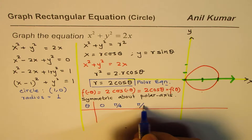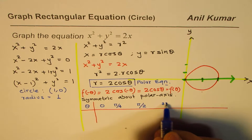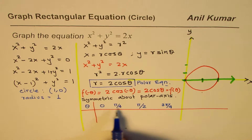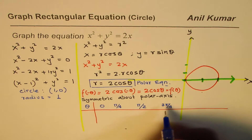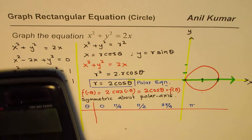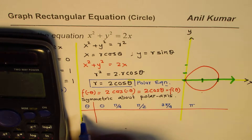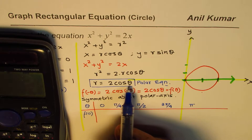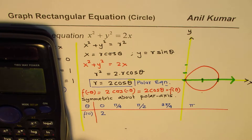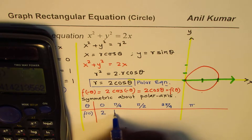So we calculate r equals 2cosθ for each value. At θ equals 0, cos 0 is 1, so r equals 2. At θ equals π/4, r equals 2cos(π/4), which in decimals is approximately 1.41.